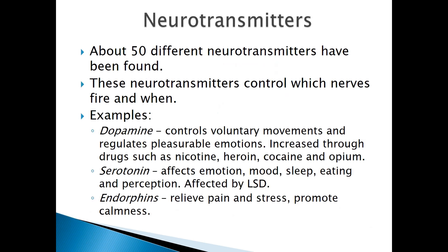We know of at least 50 different types of neurotransmitter, and these control which nerves fire and when. You might have heard of some of these, like dopamine, which controls voluntary movements and regulates pleasurable emotions. Dopamine can be increased through drugs such as nicotine, heroin, cocaine, and opium.